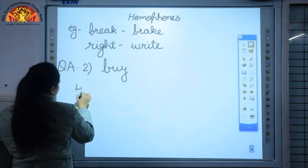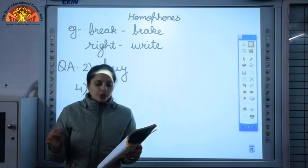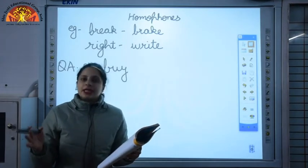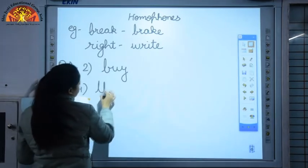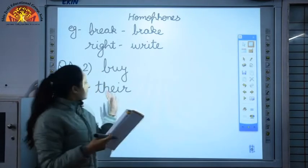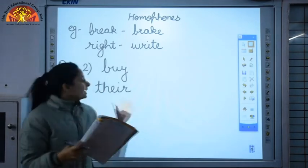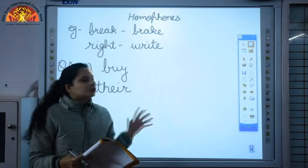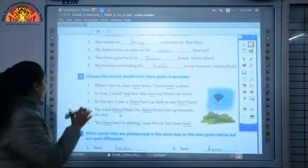Now I'll discuss the fourth one. They have gone back to blank house. T-H-E-I-R or T-H-E-R-E. Over here the correct one will be T-H-E-I-R. Because T-H-E-I-R means belonging to someone, so it is their house. And T-H-E-R-E is used to show place.